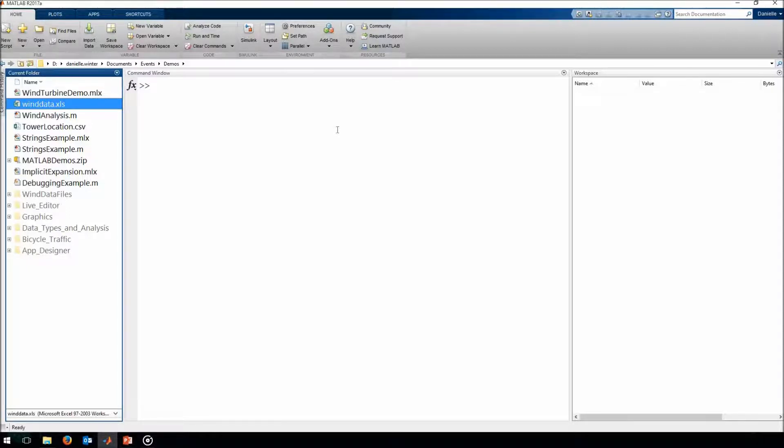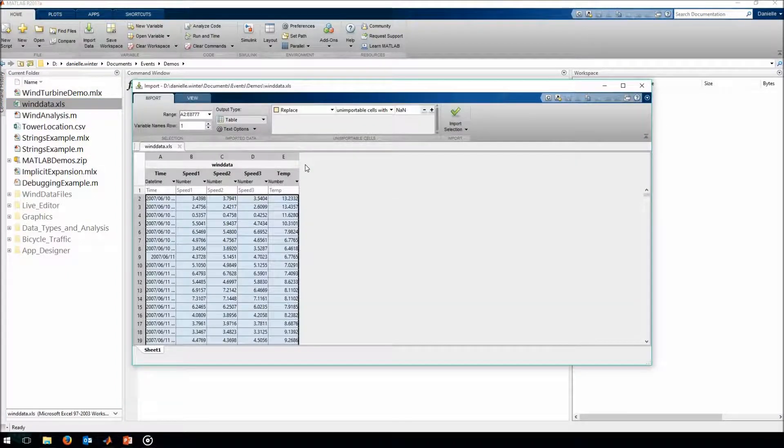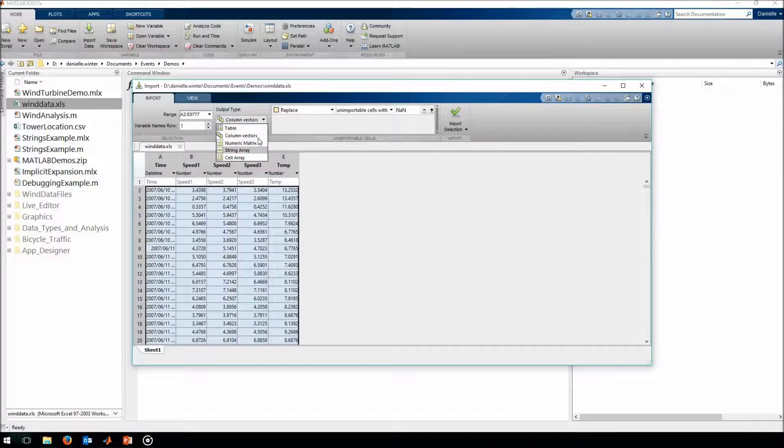This is my MATLAB programming environment. To import data with the import tool, I can either click on this icon in the home tab or I can double click on a file that I have in my current folder. With the import tool, it is a point and click environment where you can select files to import, choose how you want your data to be formatted in your MATLAB environment, choose how you want to deal with missing or non-numerical data, and the import tool also allows you to generate MATLAB code as scripts and functions which you can use for automating data import.